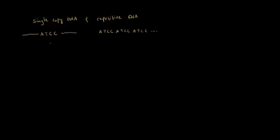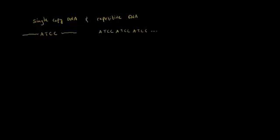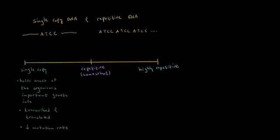So what's the difference between single-copy DNA and repetitive DNA? Here we have a spectrum. On the left, we have single-copy DNA. In the middle, we have DNA that's somewhat repetitive, and on the right, we have highly repetitive DNA. So single-copy DNA holds most of the organism's important genetic information. Basically, most of the important genes are going to be single-copy.